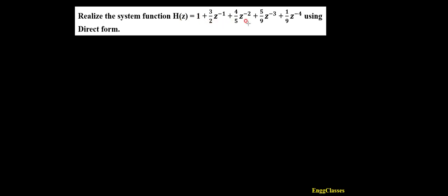Hello everyone! Welcome to ng-classes YouTube channel for a video lecture series in digital signal processing. In this video lecture we shall realize the system function H(z) which is equal to 1 plus 3/2 z⁻¹ plus 4/5 z⁻² plus 5/9 z⁻³ plus 1/9 z⁻⁴ using direct form.